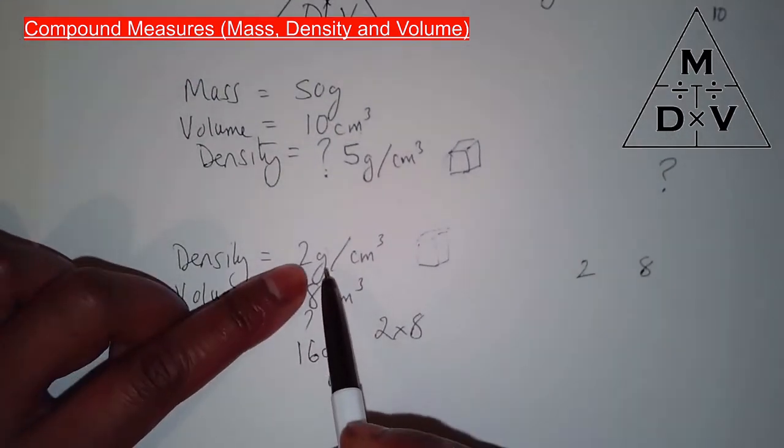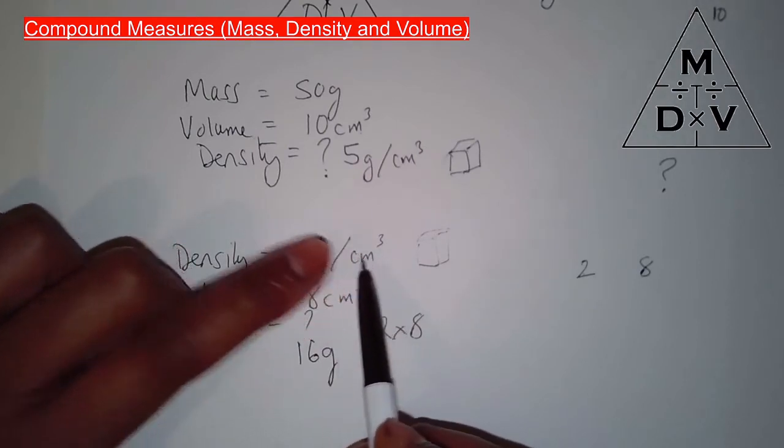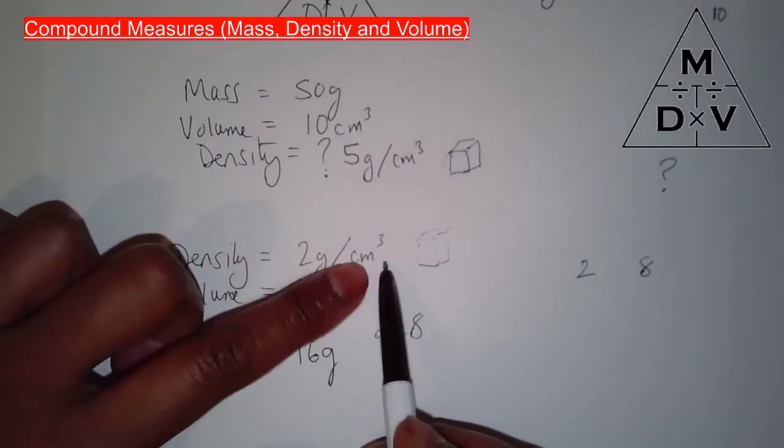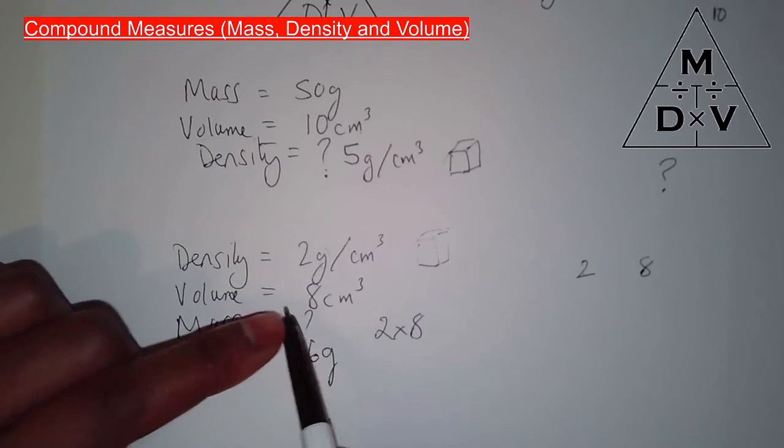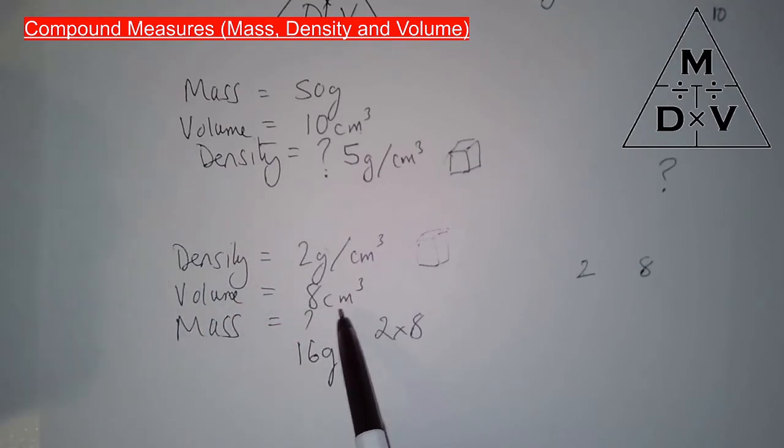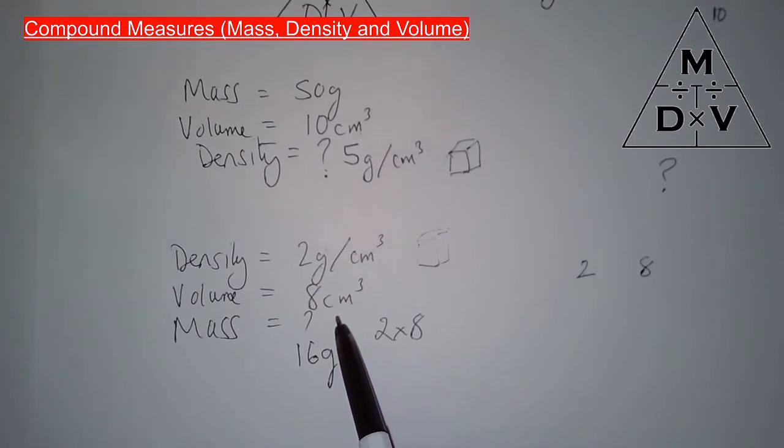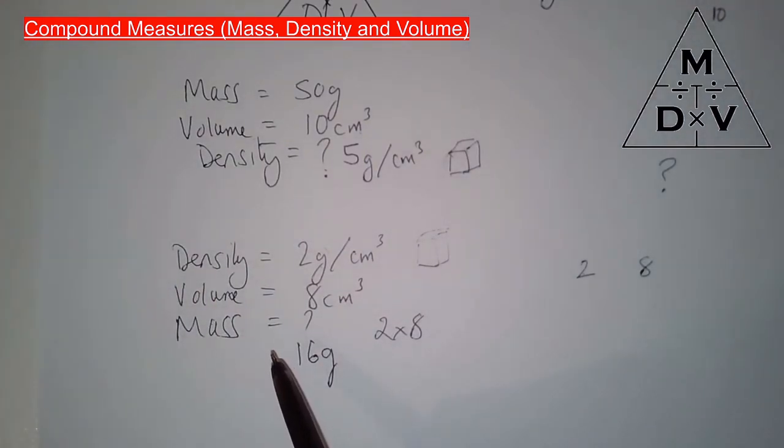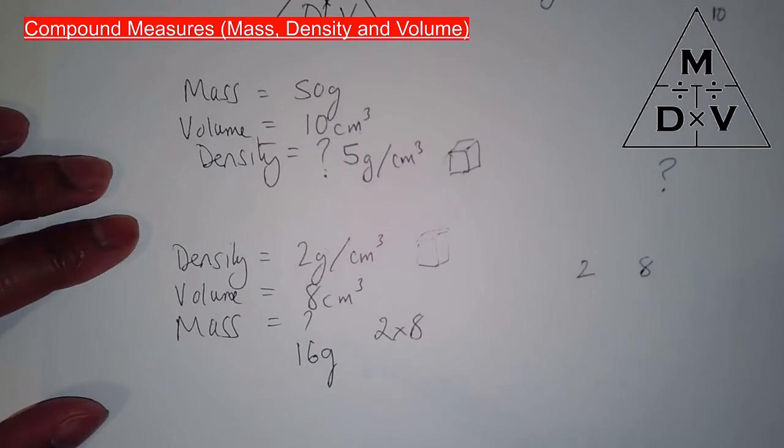So remember, density will be given as grams per cm³, could be kilograms per meter cubed, etc. Volume could be either millimeter cubed, centimeter cubed, meter cubed. If you take a large chunk of the earth, kilometer cubed. And mass could be grams, it could be micrograms, milligrams, kilograms, tons, etc.